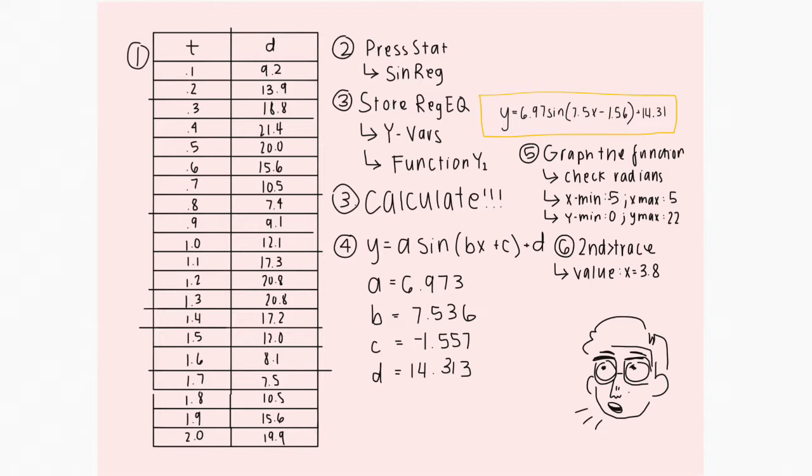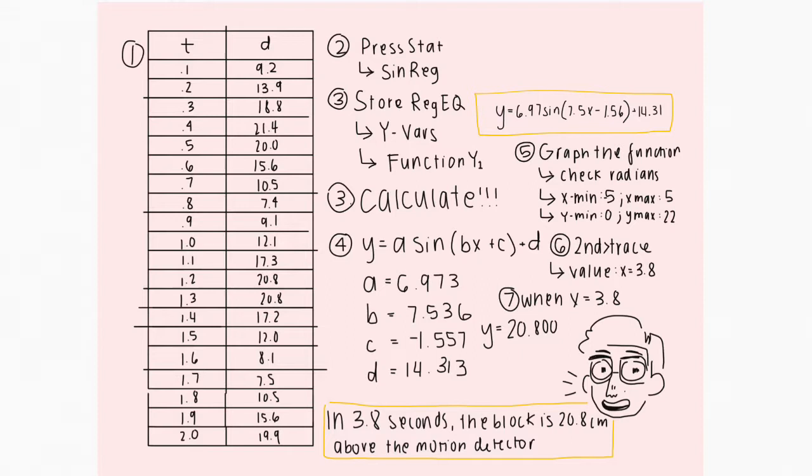Next, once we graph, we should have a sine function. From there, we can calculate when x equals 3.8, the y value. We're going to press second, trace, and then calculate the value when x equals 3.8. We're going to press enter, and then we'll find that when x equals 3.8, y equals 20.800374. And that will be our answer for the second portion of the question.